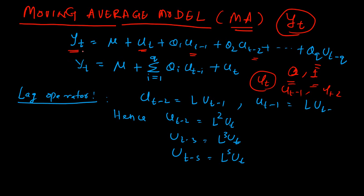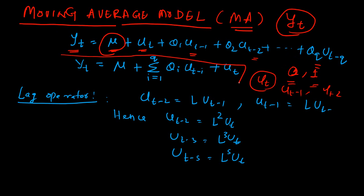The time series YT is a linear combination of different residual terms or different white noise processes. We also have the intercept mu. In many books you will find that mu is not being used — it does not make much of a difference. THETA 1, THETA 2 up to THETA Q are the parameters. You can estimate the equation and get the values of these parameters by using a maximum likelihood estimator. YT is represented as mu plus the summation from i equal to 1 to Q of theta_i times U_{t-i}, plus an error term.